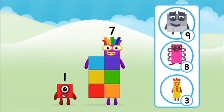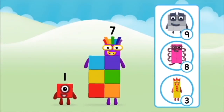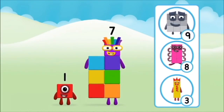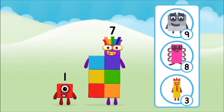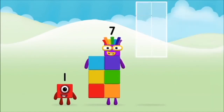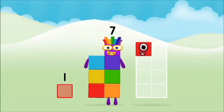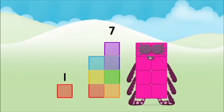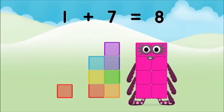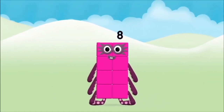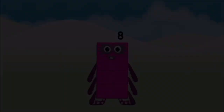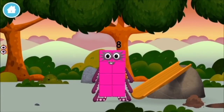What number block will you make when you add these two number blocks together? Great — can you add the number blocks together? One, seven — one plus seven equals eight! Super — you made number block eight!